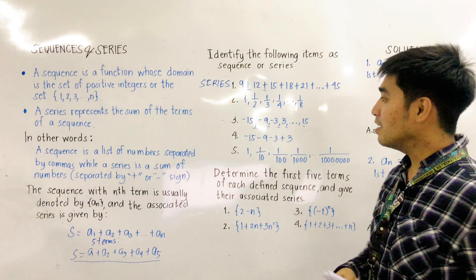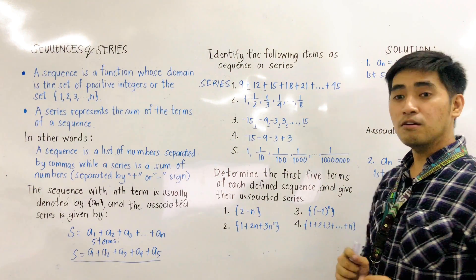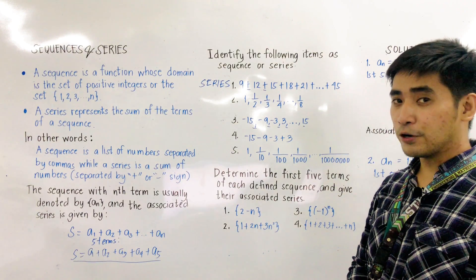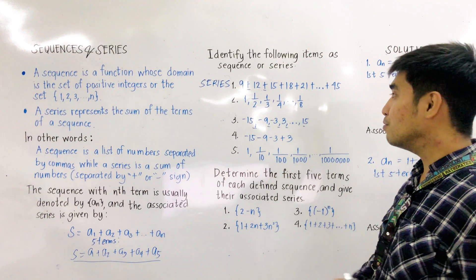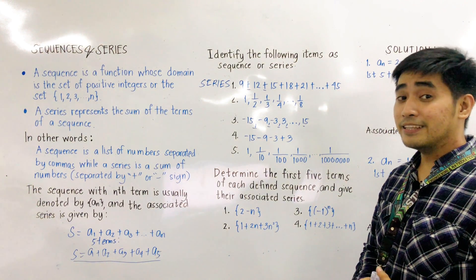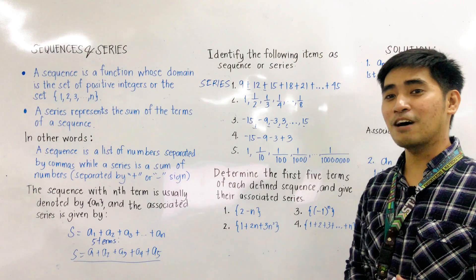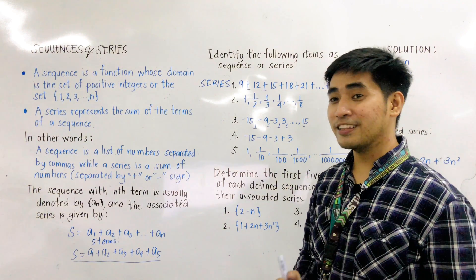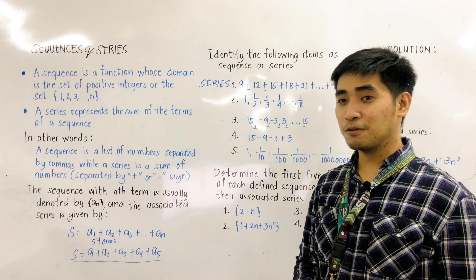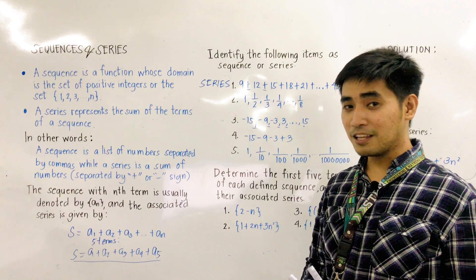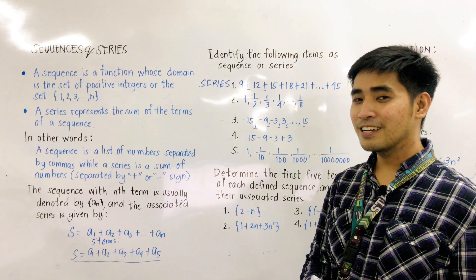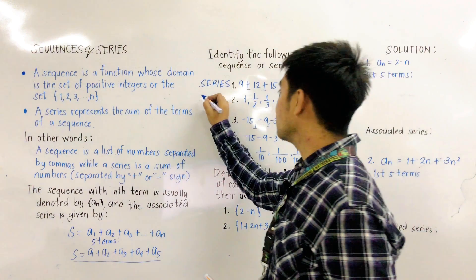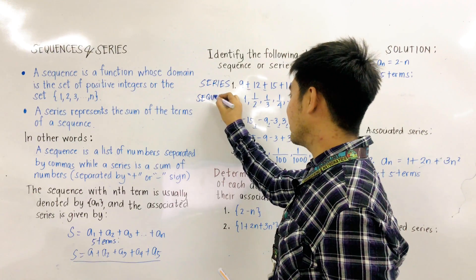For the second one, we are given: 1, 1/2, 1/3, 1/4, up to 1/8. In this case, it is separated by commas. And if it is separated by commas, we call this a sequence.